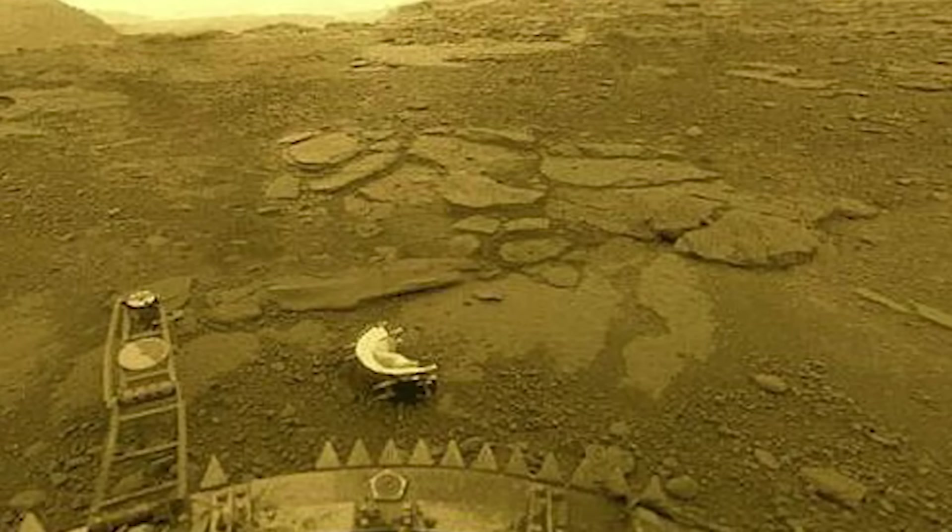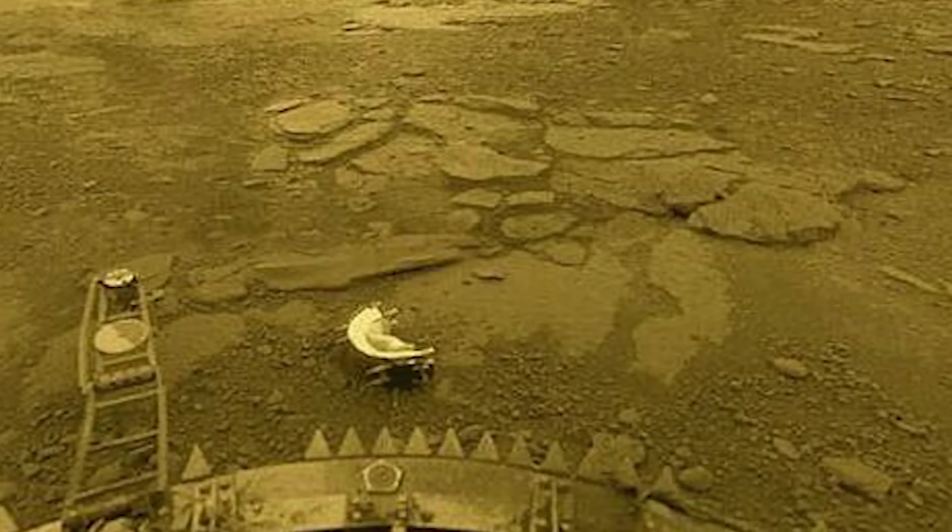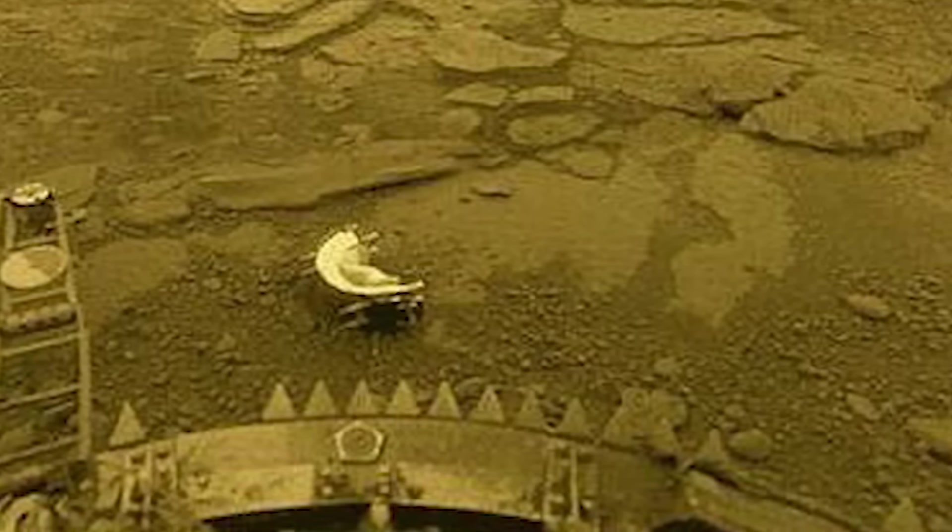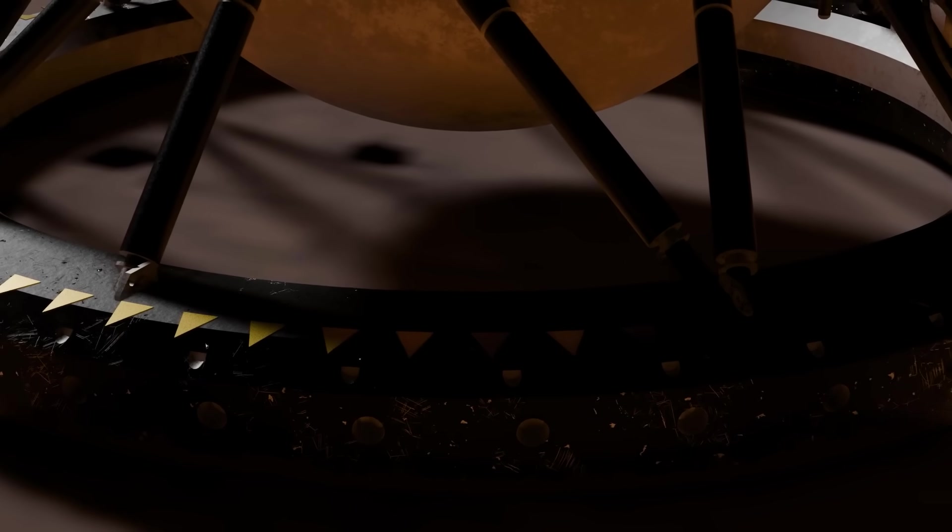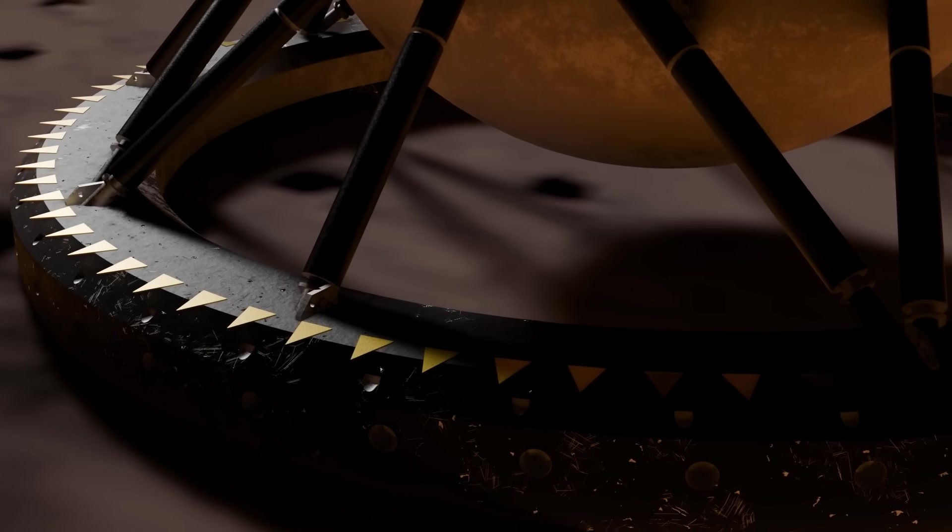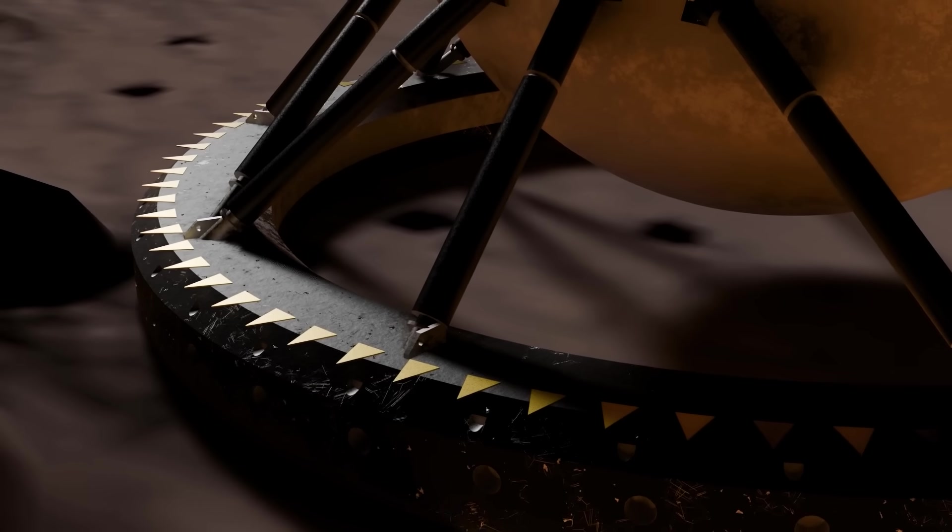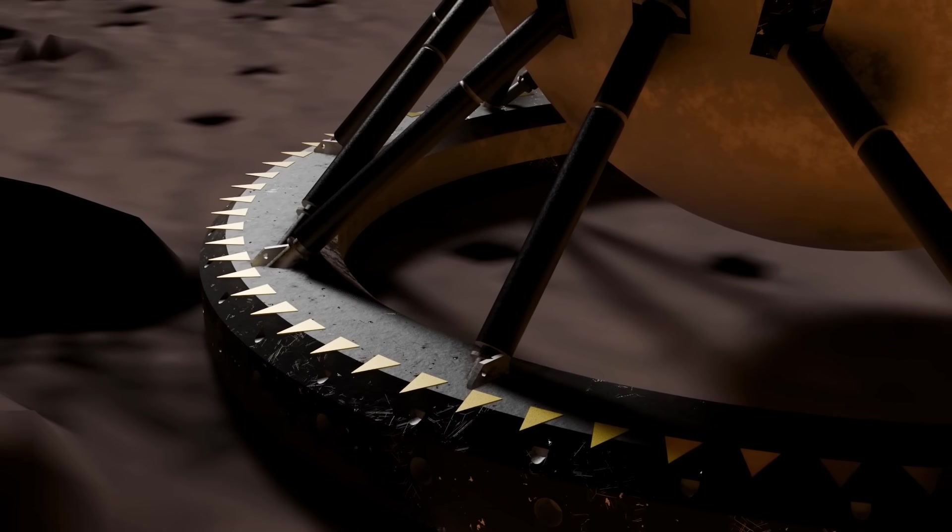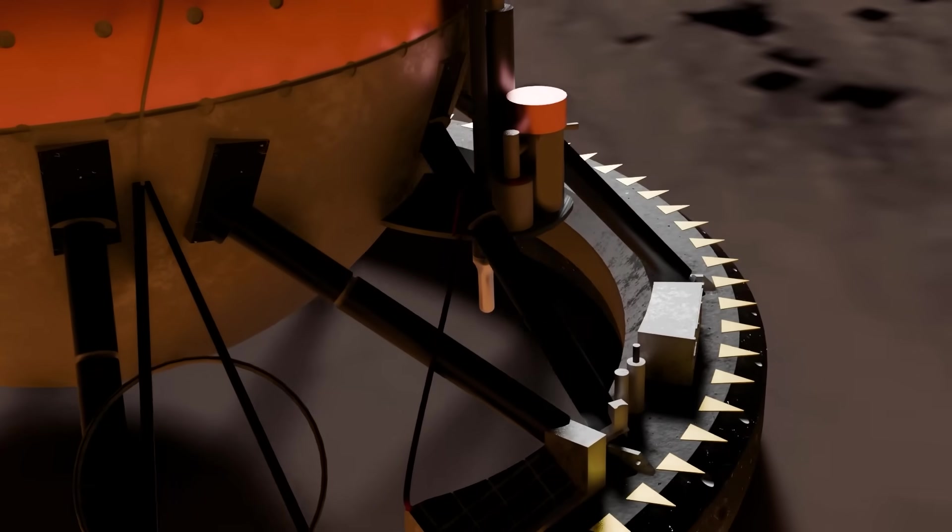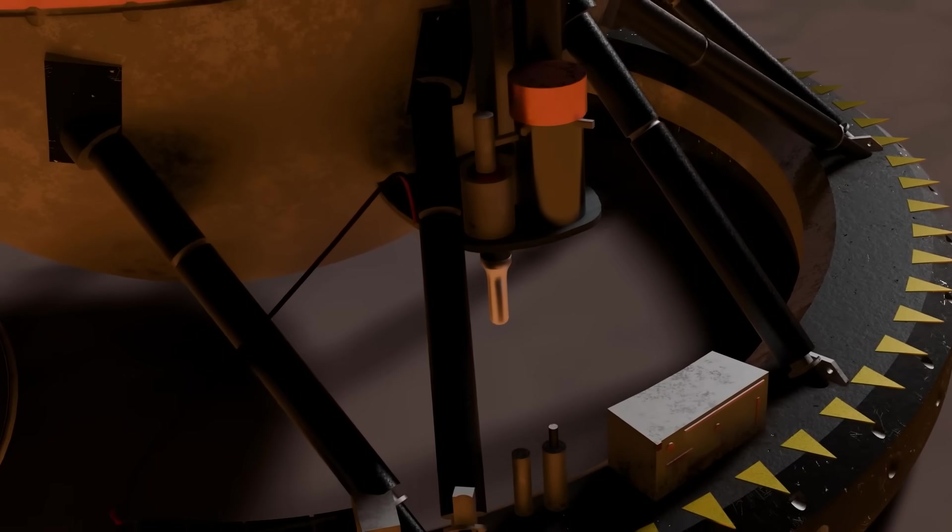You can also see the base of the lander again here, and you're probably wondering, what is the deal with those teeth? They look almost purposefully brutalist, but the teeth served an aerodynamic function. Metal fins were added to the outside of the impact ring in an effort to stop the probe from spinning and shaking as it fell, which could lead to rough landings.